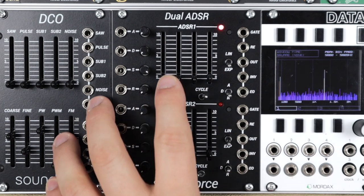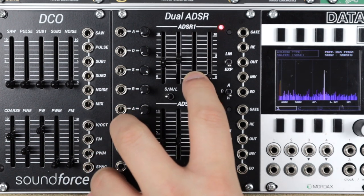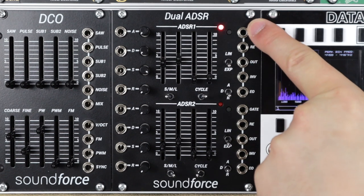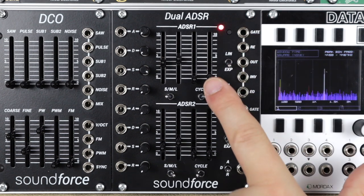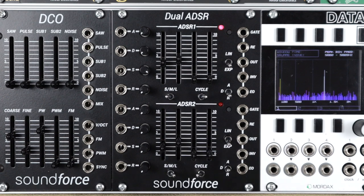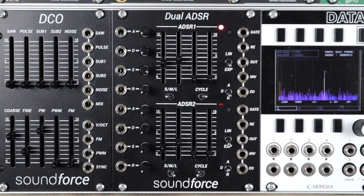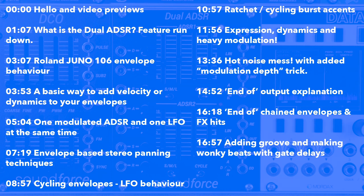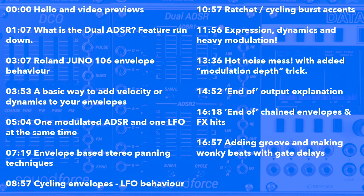Cycle mode will cycle through the attack and decay stages. The sustain will offset those, and it normals the gate high to cycle. But plugging in a cable, we can actually gate this activity on and off — it will cycle while the gate is high and then release from that point when the gate is low. You don't need to do that, and you get normal cycles when you just flick the switch, but gating your looping cycling envelopes on and off is really cool. There are tons of patches in this video with tips and tricks for getting more dynamics, modulation, and interest into your patches. So without further ado, let's dive in.